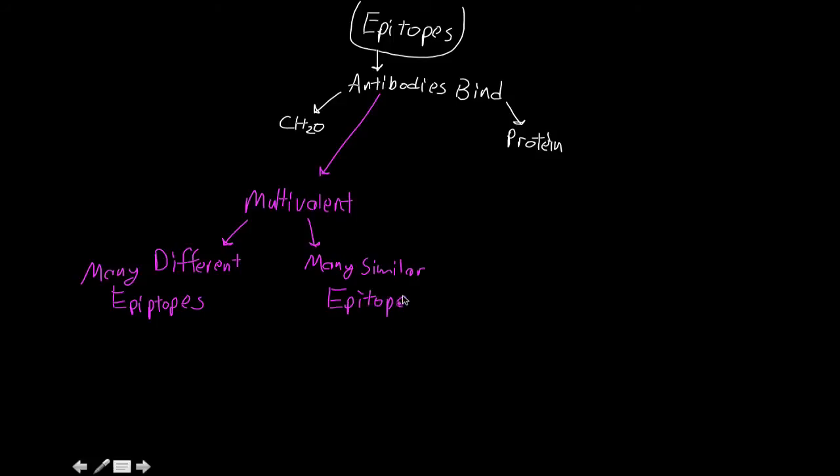There are also linear epitopes, and these bind to part of the primary amino acid sequence. The actual amino acids would be the linear epitopes.